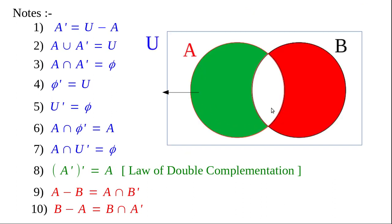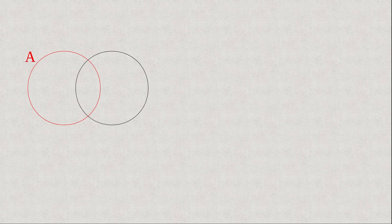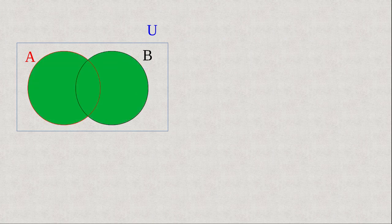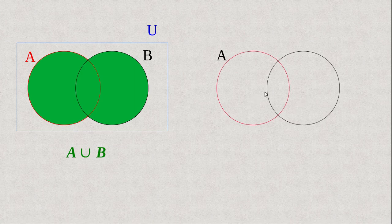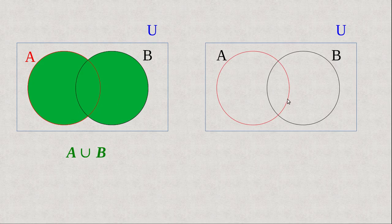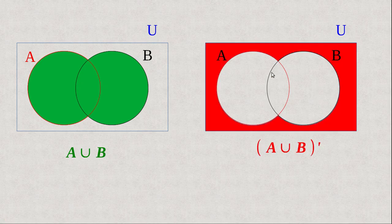Draw the diagram in your notebook representing A intersection B dash and B intersection A dash. A intersection B dash is the same as A minus B, and B intersection A dash is the same as B minus A. Now we are going to learn a new theorem — De Morgan's Law. See the Venn diagram: A and B are two sets, their universal set is U. A union B is shaded. Then what is the complement of A union B? It is the portion of U which is not in A union B — this represents A union B whole dash.